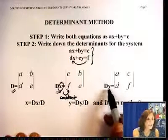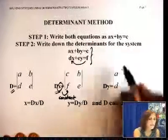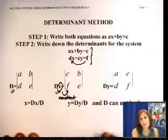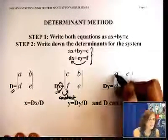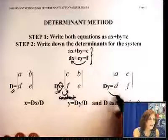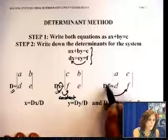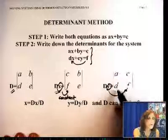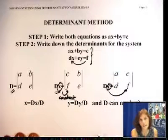With the same token, when I have D sub y, that means in the y column, I'm going to have the constant. So in the y column, I'm going to have the constant, which is c, f, and the x column will stay the same.